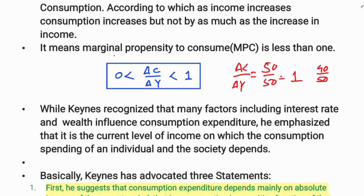While Keynes recognized that many factors including interest rate and wealth influence consumption expenditure, he emphasized that it is the current level of income on which the consumption spending of an individual and society depends. Many factors affect consumption, but it is the change in income that primarily influences consumption expenditure.